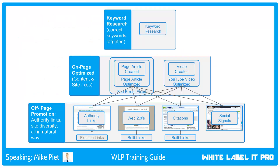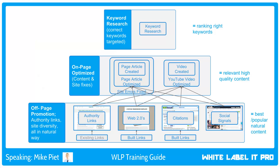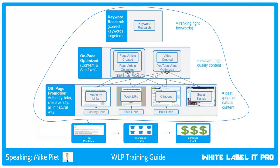We'll add social signals to our big picture visualization and checklist. Now all the pieces are complete: keyword research is done so we're ranking the right keywords; on-page optimization is done — page article created, page article optimized, site errors fixed, YouTube video created, and YouTube video optimized; and the off-page promotion section — high authority links, Web 2.0s, citations, and social signals — all pointing to both the page article and the YouTube video. This is exactly what Google wants: the most relevant, best, popular content in the top position so users have the best experience, giving Google exactly what they want to rank in the top position for more traffic and more profit.